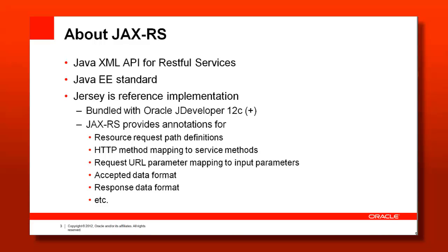12c provides full RESTful service support — the Java EE6 libraries are bundled. We also provide a RESTful service data control and a wizard that easily allows you to expose Java objects, POJOs, or Enterprise JavaBeans as RESTful services. What JAX-RS provides are annotations, because all methods you want to expose on a RESTful service interface are simply annotated — for the access path (GET, POST, PUT, DELETE), a URI mapping, and optional query or path parameters.